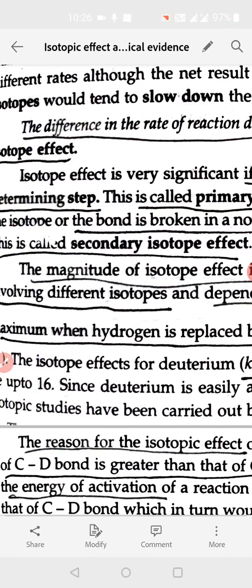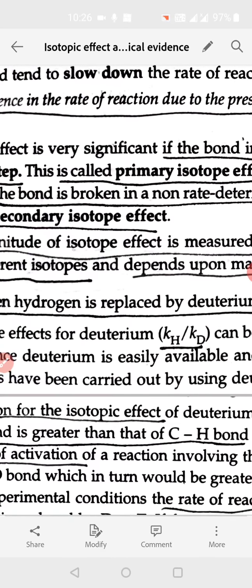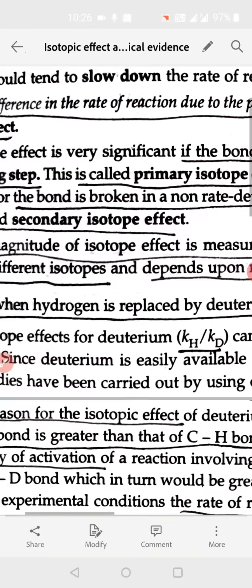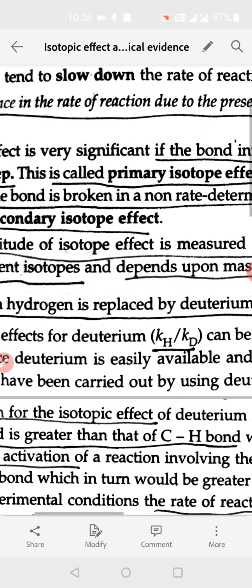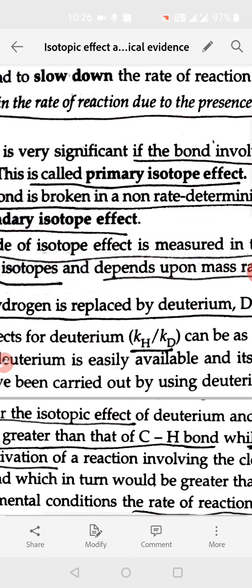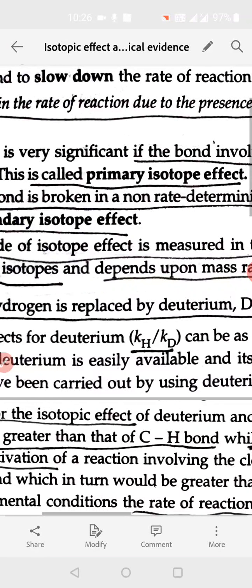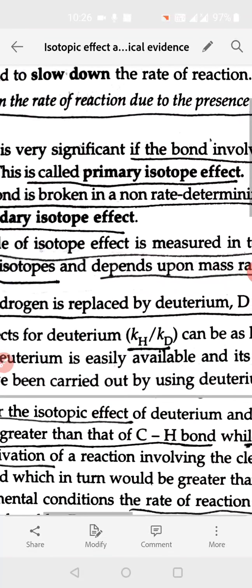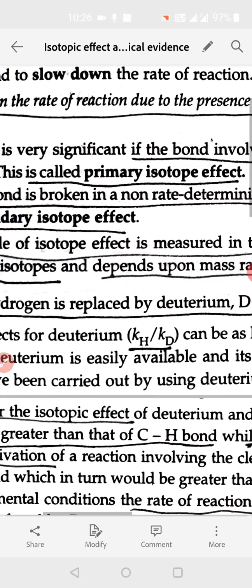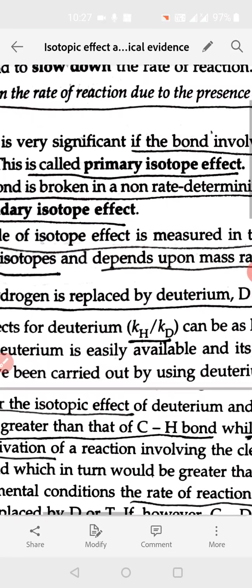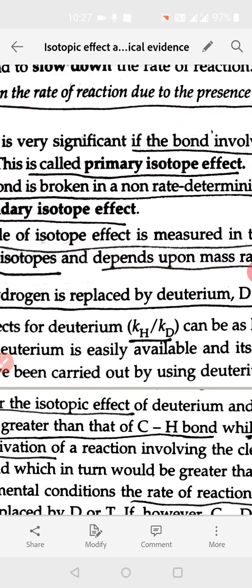This effect is of two kinds: one is primary effect, second is secondary isotope effect. Primary effect is when the bond involving the isotope is being broken in the rate-determining step. Then it is called primary isotope effect. If the carbon-hydrogen bond or carbon-deuterium bond is involved in the slowest step in the reaction mechanism, then the rate of reaction would be changed. So if the rate of reaction is influenced by the change of hydrogen with deuterium, then it is called primary isotope effect.